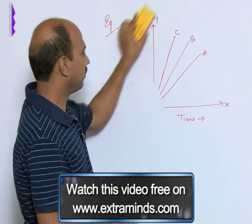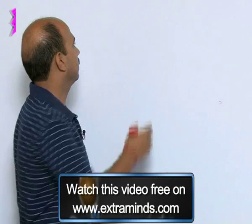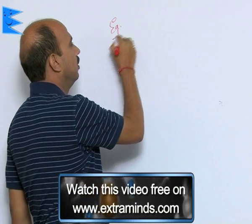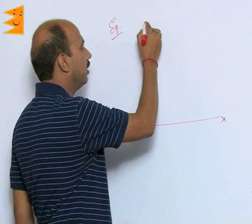Now, take another example. Here if we take, suppose, distance time graph is like this: here is x axis, here is y axis, there is distance, there is time, this is O, and the graph is like this.